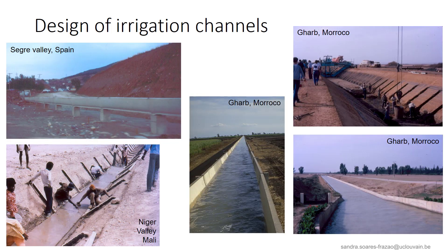We see different examples where irrigation channels can have a trapezoidal shape, a rectangular one, or a semicircular one. However, it must be pointed out that the theoretical results lead to deep cross sections that are more expensive to dig and may induce bank stability issues. So in practice, the cross section will often be wider and shallower. With this, we finish this lesson about uniform flow.